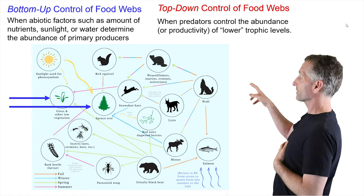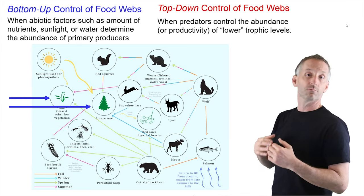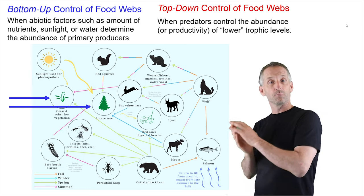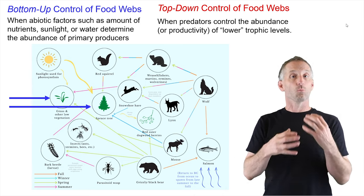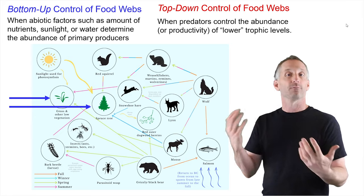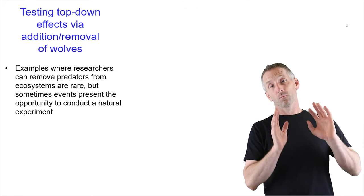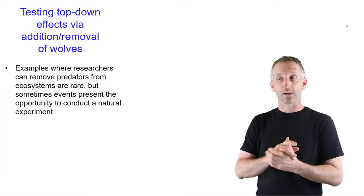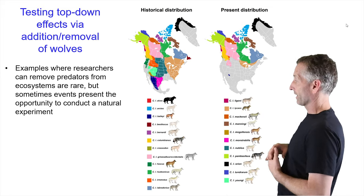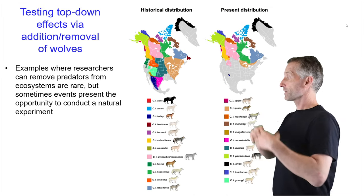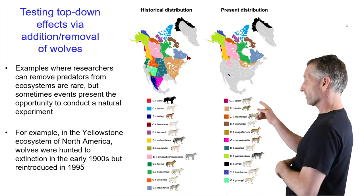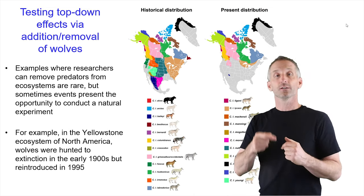Top-down control particularly occurs when predators control the abundance or productivity of some of the lower trophic levels. For example, if wolves in the system eat or scare so many moose that they don't browse as much, then that might influence the size of riparian trees, which might have a whole series of other cascading influences. Wolves used to be present throughout North America in different subspecies, but they disappeared from most of southern North America.